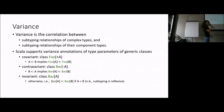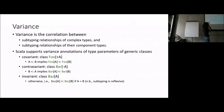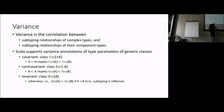Scala supports variance annotations on type parameters of generic classes. There are three concepts: covariant, annotated with plus A — if A is a subtype of B, then F[A] is a subtype of F[B]. Contravariant is the dual, annotated with minus — if B is a subtype of A, then F[A] is a subtype of F[B], so the subtyping relationship is flipped. Invariant is the default with no annotation, meaning F[A] is a subtype of F[B] only if A equals B, since subtyping is reflexive.